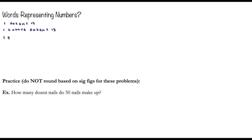Let's talk about some other words that represent numbers. A pair — if I tell you I have one pair, how many do I have? Well, I've got two. Normally we refer to a pair when we're talking about shoes, but I could say I have a pair of brothers or a pair of calculators — that represents two.